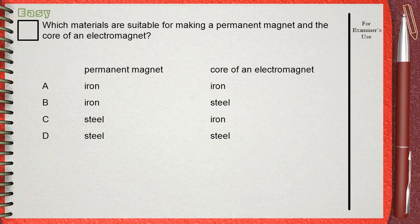Which materials are suitable for making a permanent magnet and the core of an electromagnet? And you have these choices: A, B, C and D.